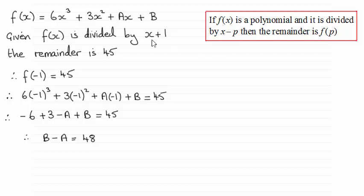So when I compare x plus 1 with x minus p, p would have to be negative 1. So we know then that f of minus 1 must equal the remainder 45.